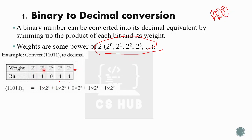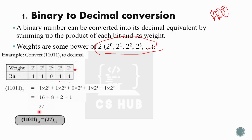We calculate: 1×2⁴ + 1×2³ + 0×2² + 1×2¹ + 1×2⁰ = 16 + 8 + 0 + 2 + 1 = 27. That decimal number is our result. Now we will convert another binary number. The bits go from 2⁰ at the rightmost up through 2⁶.